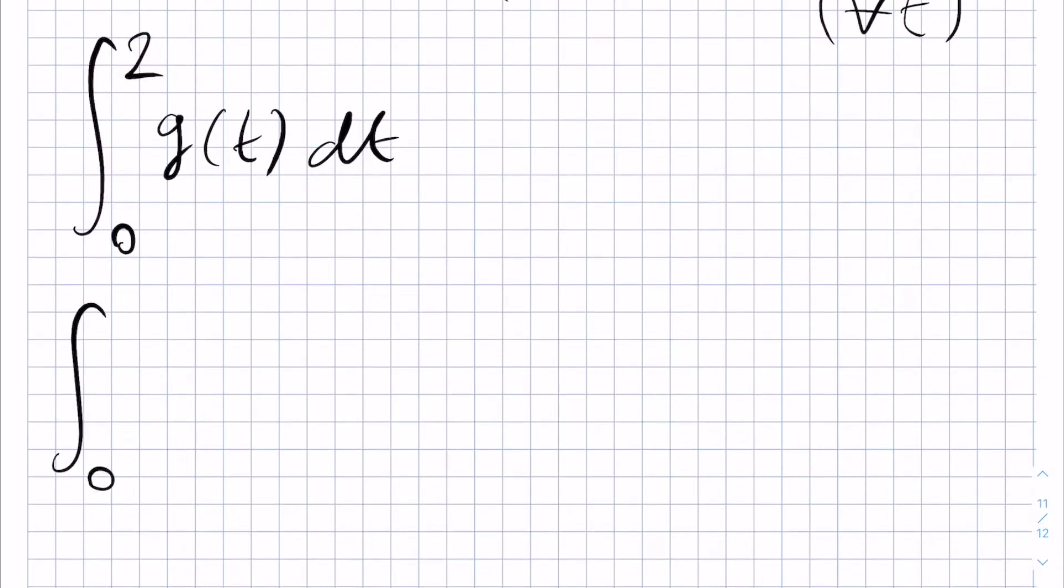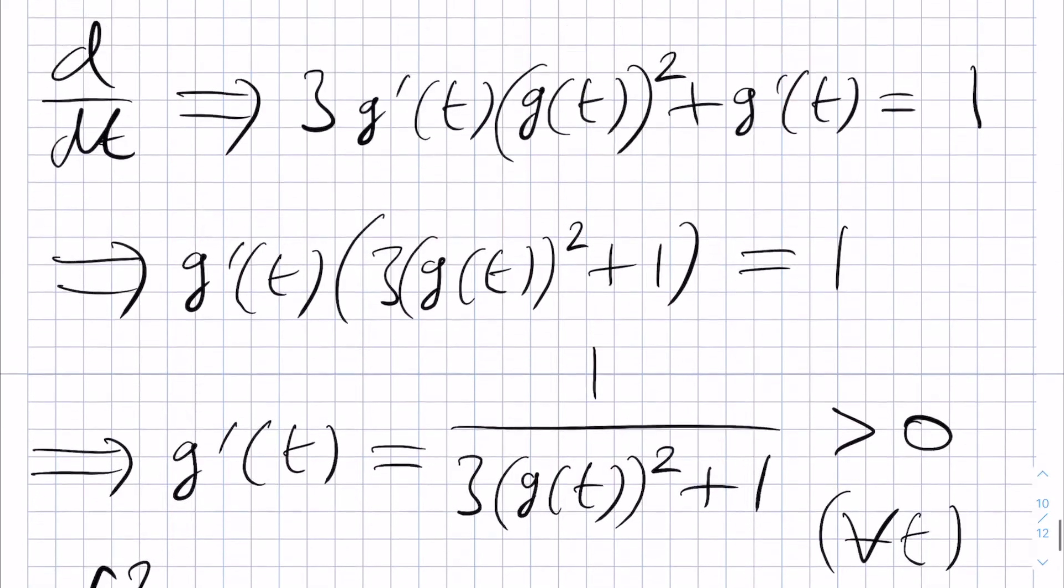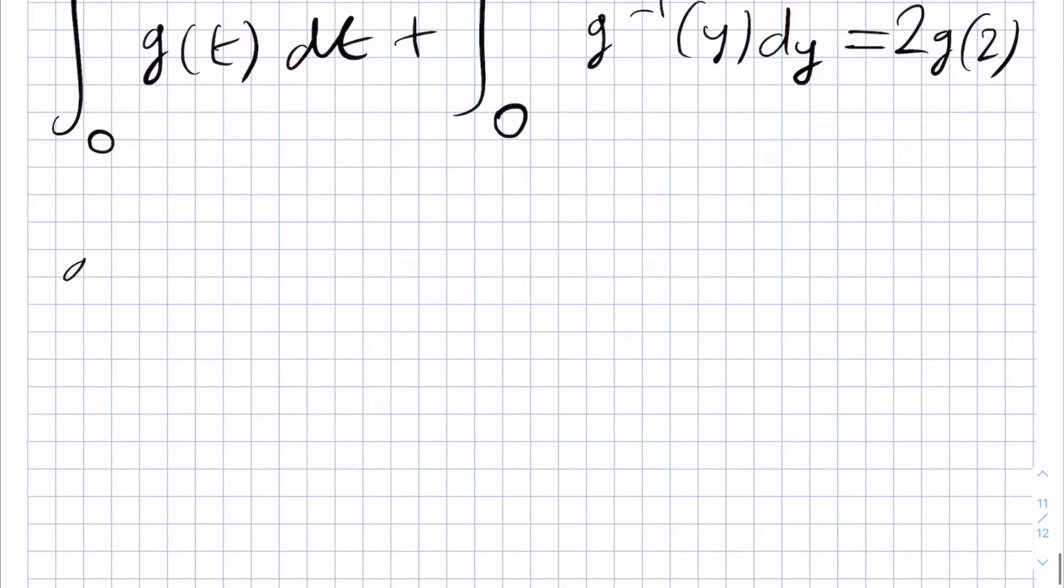it tells us that the integral from 0 up to 2 of g(t) dt plus the integral from 0 up to g(2), and then g inverse of y dy is equal to 2 times g(2). Hence, it will be helpful to first find the value of g(2). Using the relation that defines g in the first place,